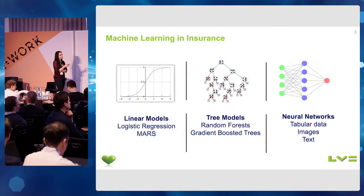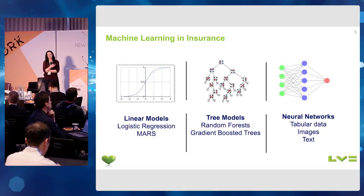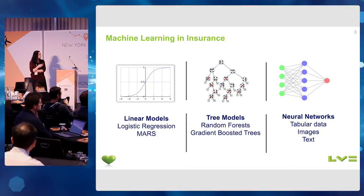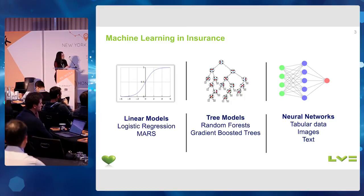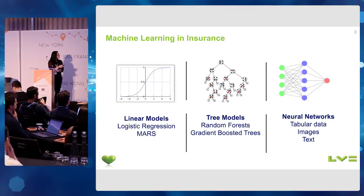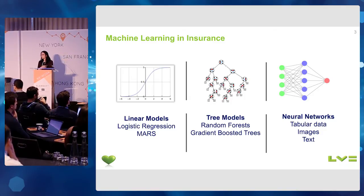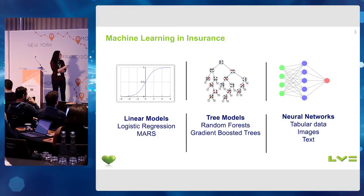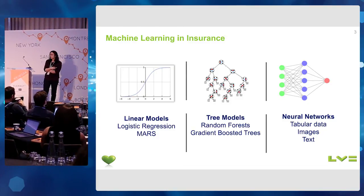There are also many machine learning algorithms that we can use to introduce this automation or better decisions, like for example linear models such as logistic and linear regression, and also tree-based models like random forest and gradient-boosted trees, as well as neural networks. We can apply neural networks to tabular data, to images, and also to text.